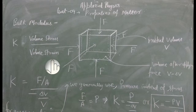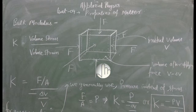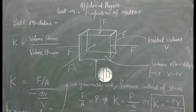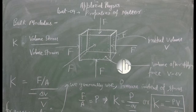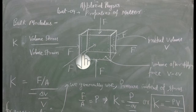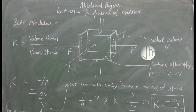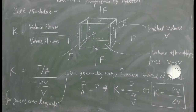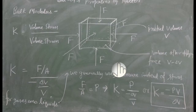Volume stress اور volume strain کو سمجھنے کے لئے یہاں پر ہم نے ایک object دکھایا ہوا ہے۔ یہ cubical shape ہے اور اس کے سبھی فلکوں پر سبھی طرف سے ایک سمان لمبت بل لگ رہا ہے۔ بل لگنے کے کارن اس کا جو ابتدائی volume تھا وہ تھوڑا کم ہو گیا ہے۔ Initial volume کو solid lines سے دکھایا ہوا ہے اور force apply کرنے کے بعد کی situation dotted line سے دکھائی گئی ہے۔ Suppose initial volume is capital V and the volume after applying the force is V minus delta V — یعنی بل لگانے کے بعد sample کا volume delta V سے کم ہو گیا ہے۔